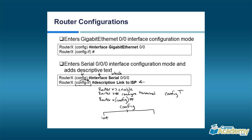The nice thing about a description is that it helps in troubleshooting. Eight months from now, if you're looking at the configuration trying to remember what that serial interface was supposed to do, you look at the description and it says 'links to the internet service provider' — and then you know which one you're working with. Descriptions are nice to add that descriptive text to be helpful later when somebody looks at configurations.